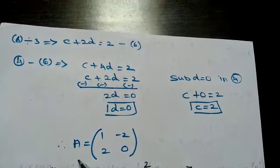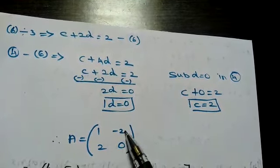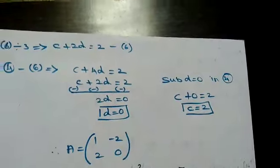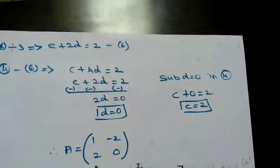So from this, the matrix A is equal to [[1, -2], [2, 0]]. That's all.